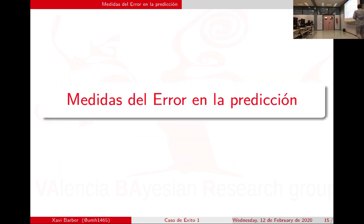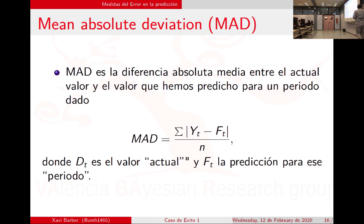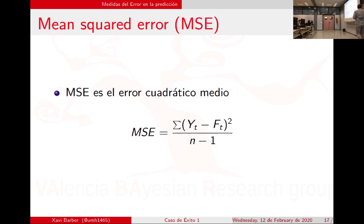Las medidas del error ya las hemos visto. El error absoluto: coge lo que yo espero menos lo que mi modelo ajustó, lo pongo en valor absoluto y lo voy sumando. El problema es que la diferencia de 1 a 4 es 3, y la diferencia de 20 a 23 también es 3, pues igual. El error cuadrático medio sí va a penalizar las diferencias conforme se hacen más grandes: una diferencia de 3 unidades aquí se convierte en 9.